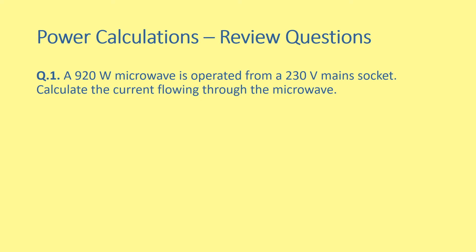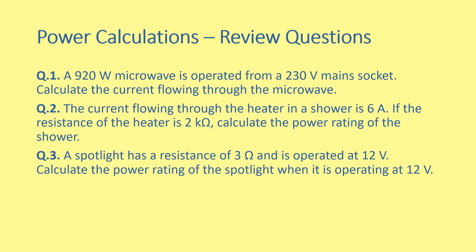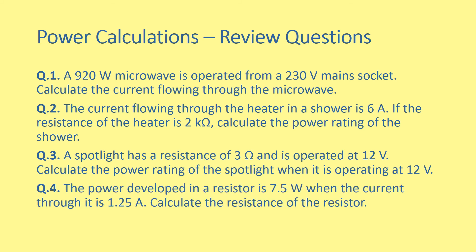Question one: a 920 watt microwave is operated from a 230 volt mains socket — calculate the current flowing through the microwave. Question two: the current flowing through the heater in a shower is 6 amperes; if the resistance of the heater is 2 kilohms, calculate the power rating of the shower. Question three: a spotlight has a resistance of 3 ohms and is operated at 12 volts — calculate the power rating. Question four: the power developed in a resistor is 7.5 watts when the current through it is 1.25 amperes — calculate the resistance.